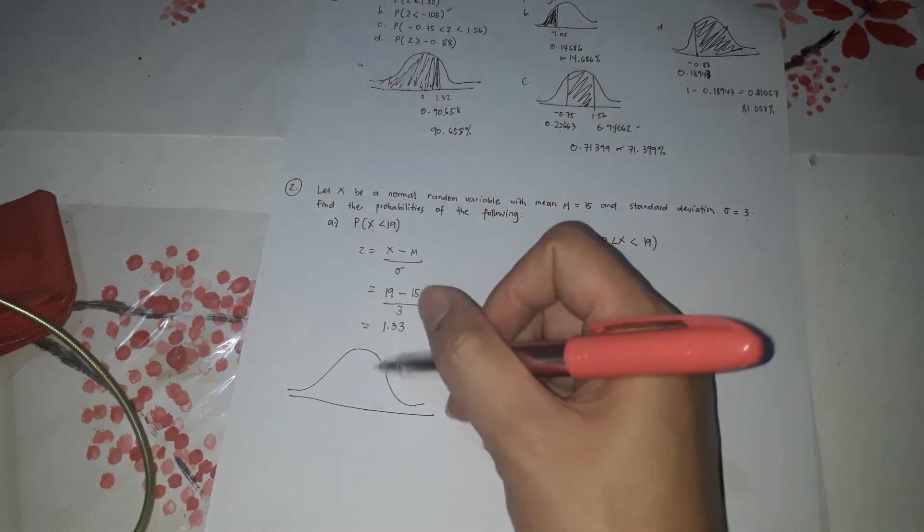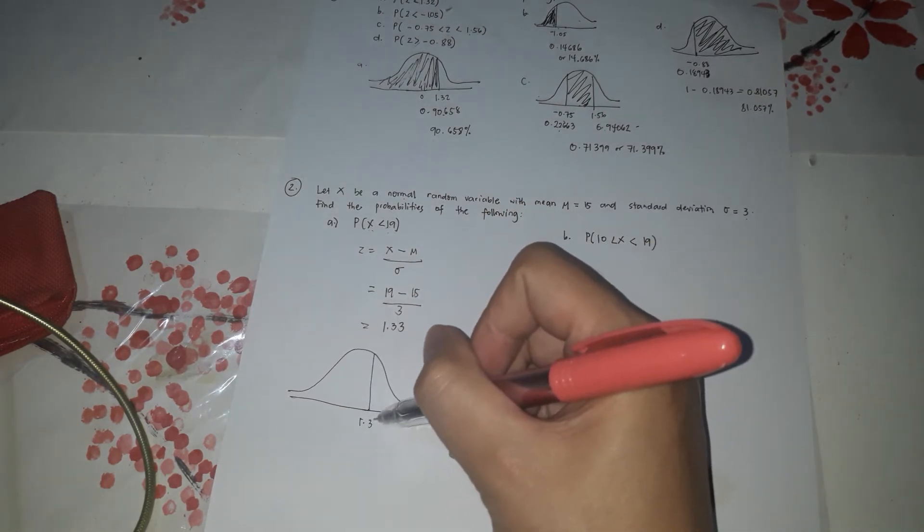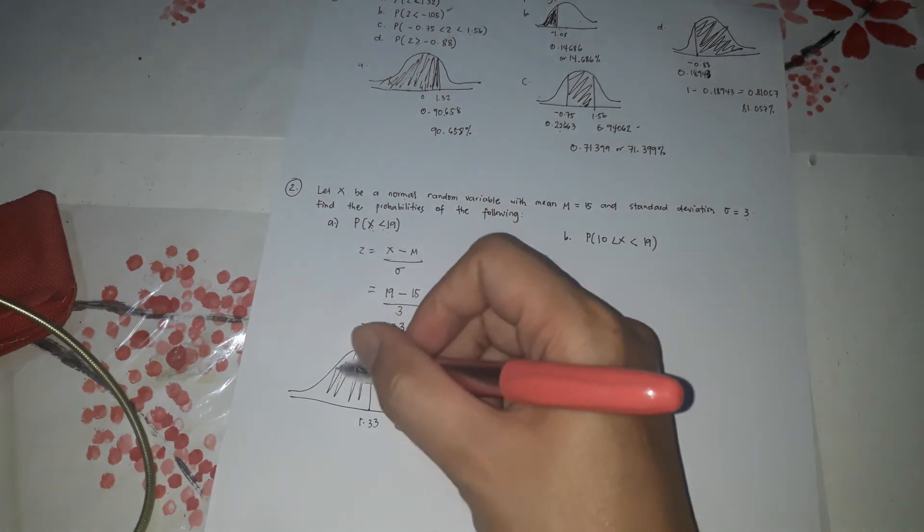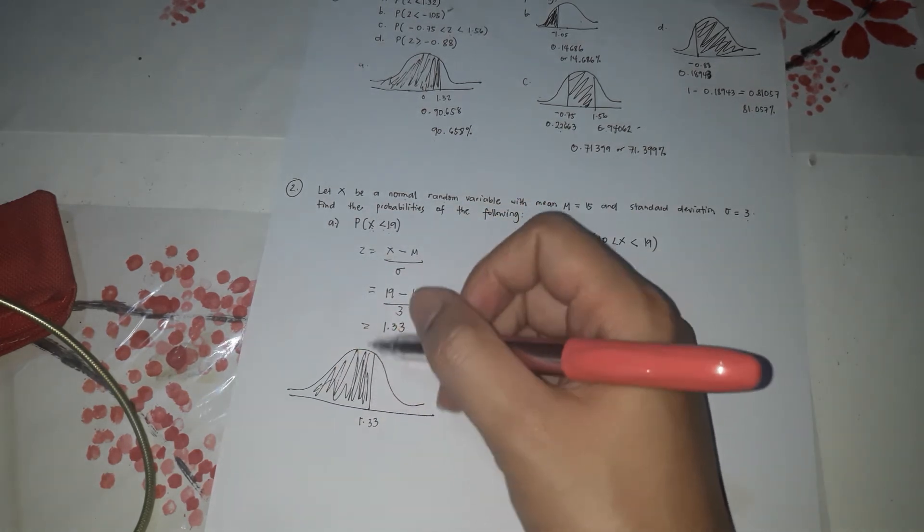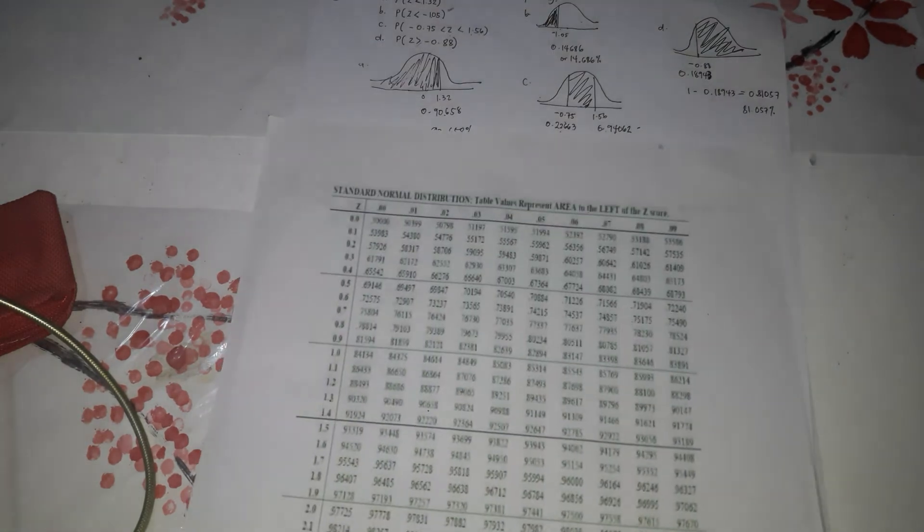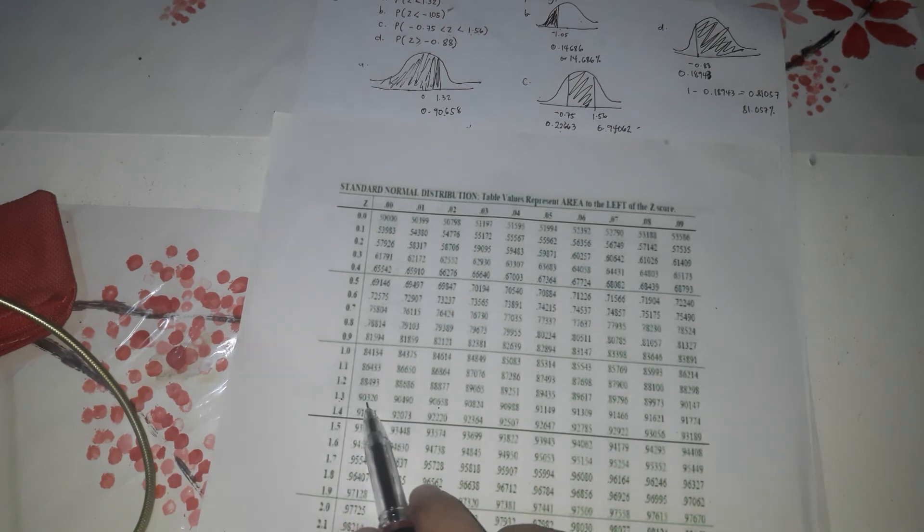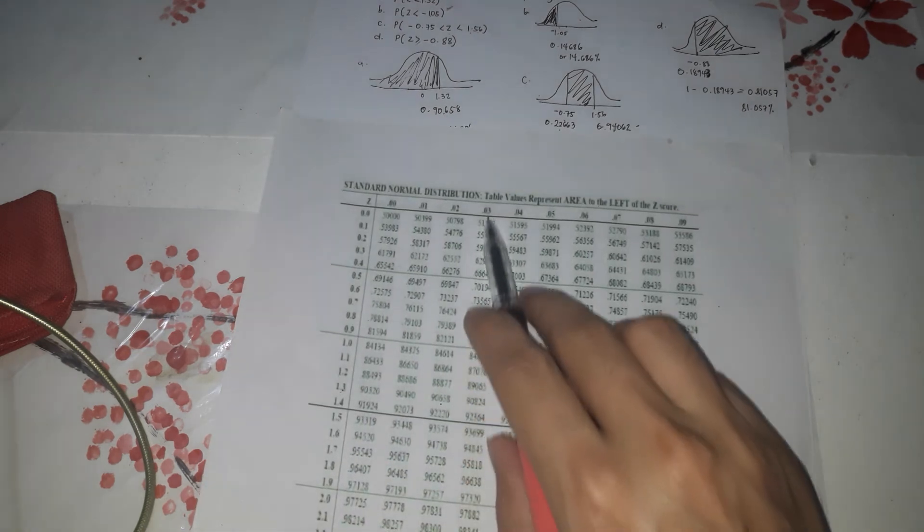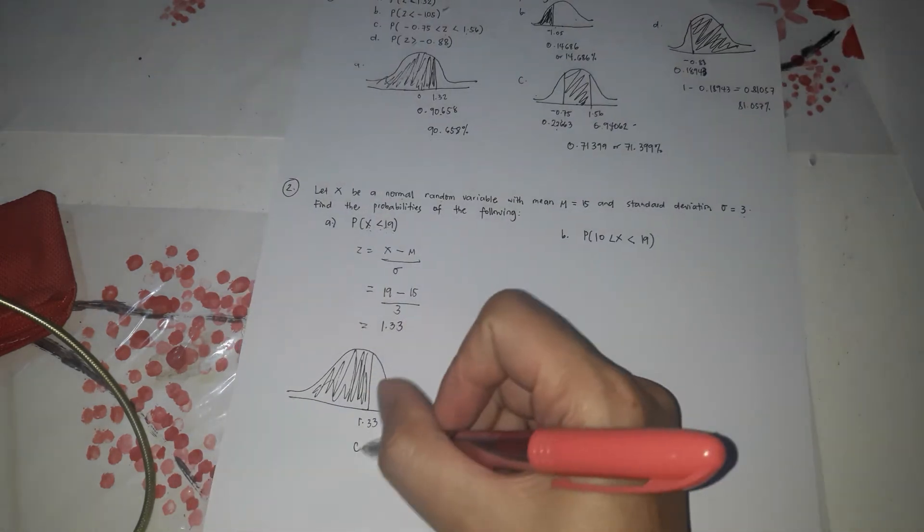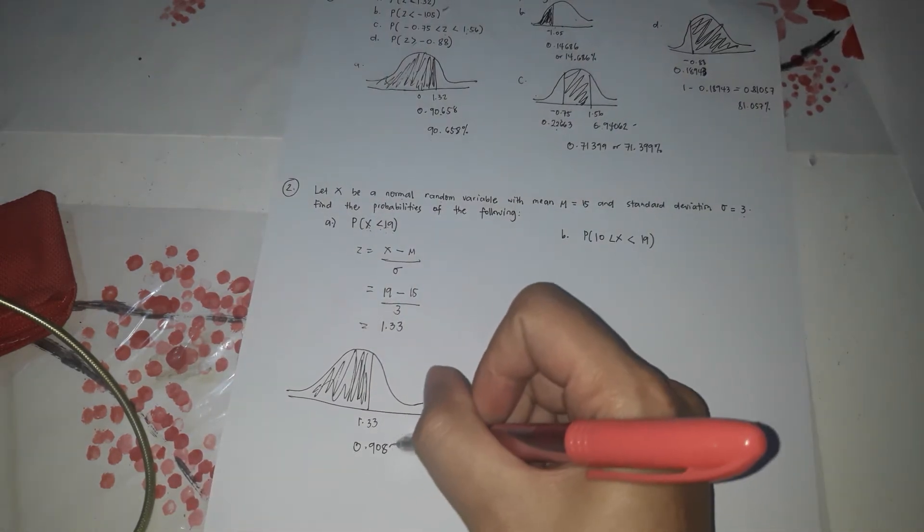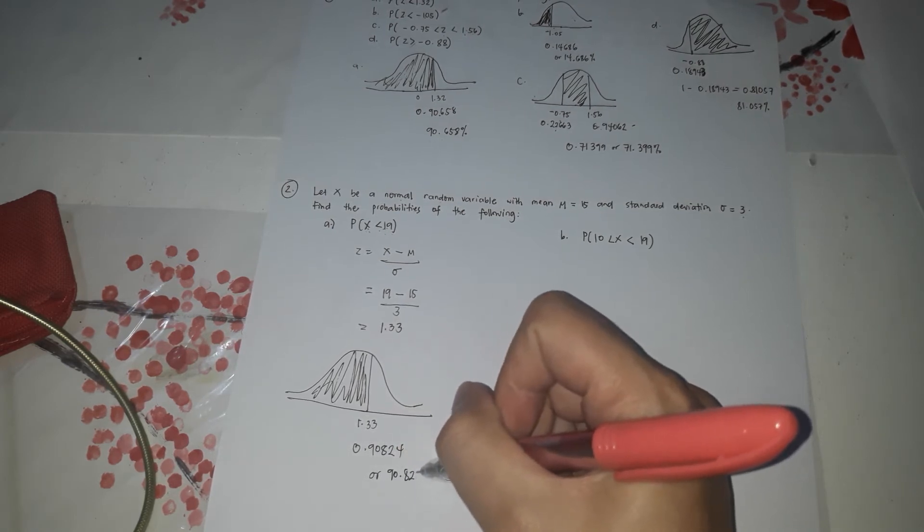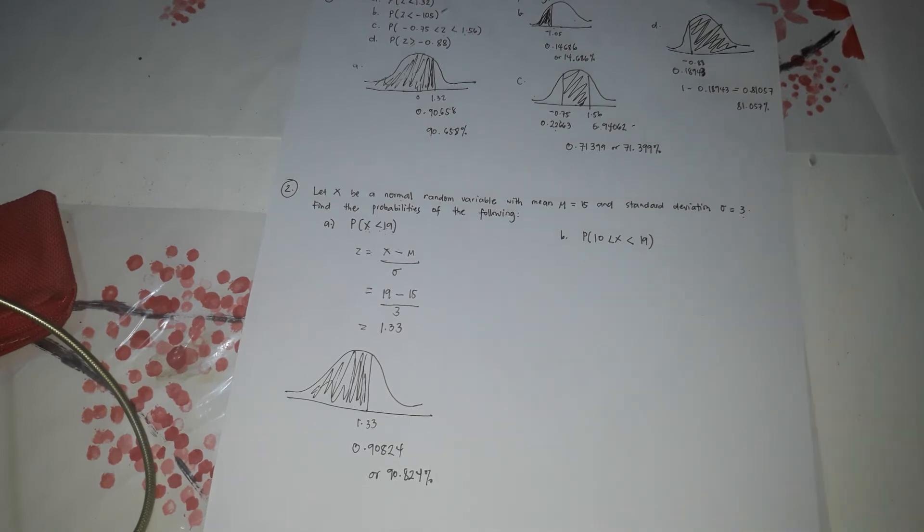So 19 minus 15 divided by 3. It's 1.33. So let's round it off to 2 decimal places. 1.33. So because this is 1.33, let's draw the normal curve. 1.33. x is less than. So less than to the left. So if it's left, we just find it. 1.33. So 0.9824 or 90.824%.